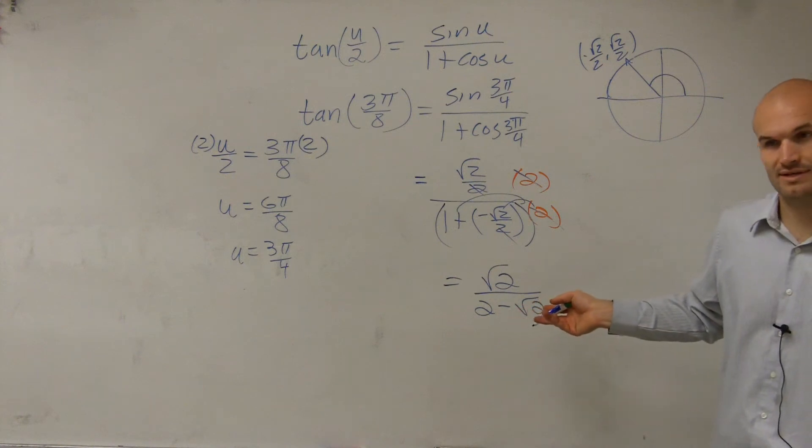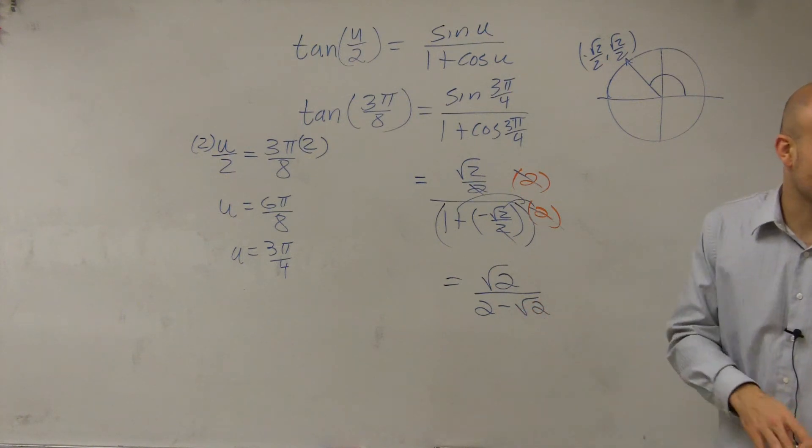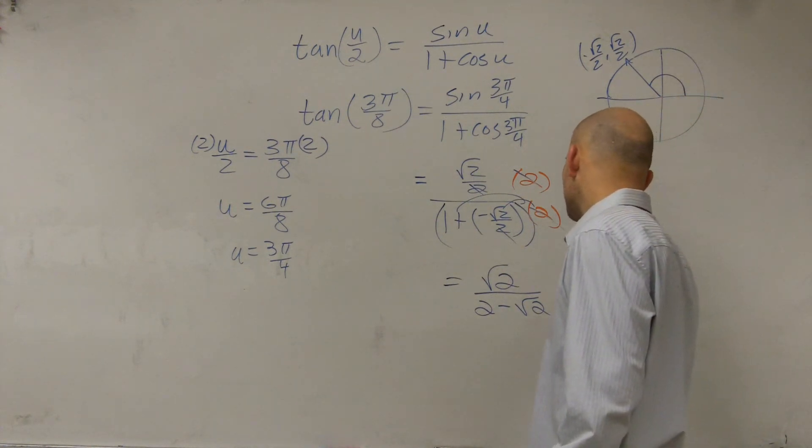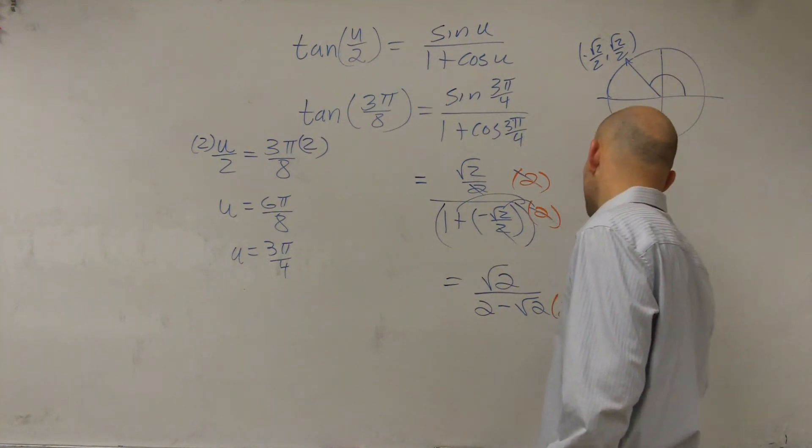Now, we don't want to have this answer like this. We always got to multiply. We got to get that off the bottom. So now what we're going to have to do is multiply by the conjugate.